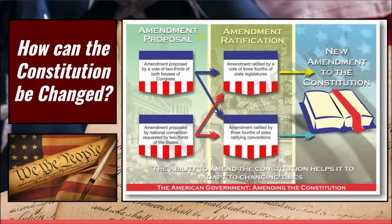In other words, if Congress is not taking action and there is a clamoring in the country for a change, two-thirds of the states — which is 34 — could propose a change. That has never happened. We have not had a Constitutional Convention since September of 1787, but this is in the Constitution and it could theoretically happen.